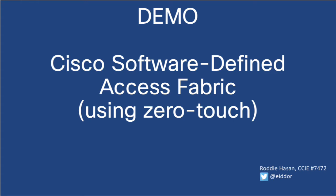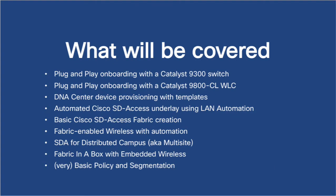We're going to build a fabric using zero touch, and I'll explain what that means a little later on. We're going to do PNP onboarding with a Catalyst 9K switch, and also PNP onboarding with a Catalyst 9800 WLC, which is a pretty new feature available soon. I'm going to take you through Cisco DNA Center device provisioning and templates, then build an SD-access underlay using LAN automation — a zero touch technology — using plug and play to onboard devices and build the underlay.